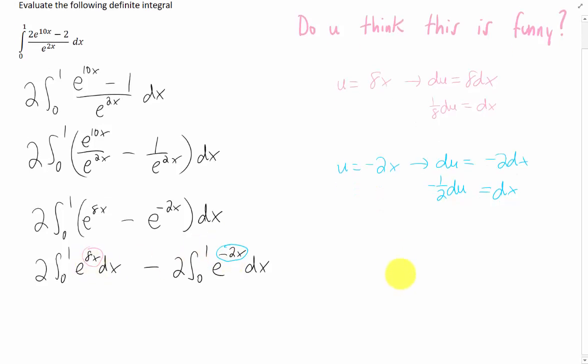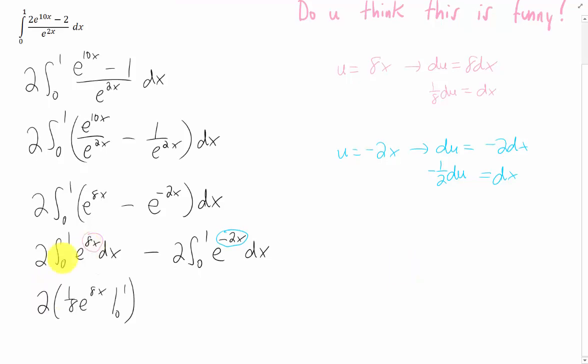Now I've mentioned this in previous videos, so I think that we can just do it. Our first integral is just going to end up being 1/8 e to the 8x, evaluated from 0 to 1, and the second integral is just going to be negative 1/2 e to the negative 2x, evaluated from 0 to 1.